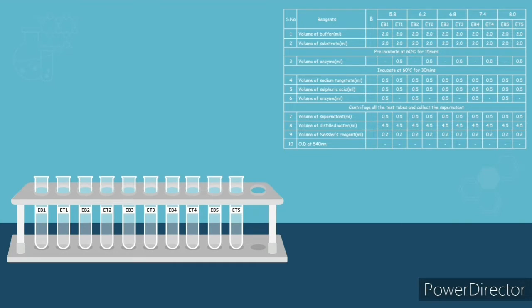The tabular column illustrates the procedure. Buffer and substrates are initially added and pre-incubated at 60 degrees centigrade for 15 minutes, followed by the addition of enzyme. They're incubated at 60 degrees centigrade for 30 minutes, followed by the addition of sodium tungstate, sulfuric acid, and enzyme.